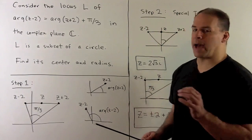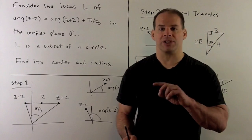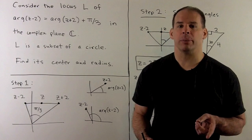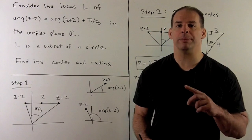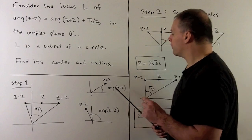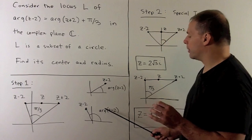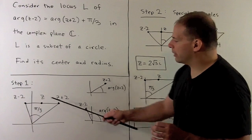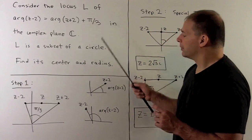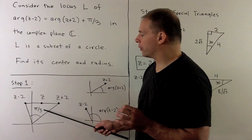We want to consider what's happening when we talk about arguments. The argument of a complex number is the angle measured counterclockwise from the positive real axis to our point, between 0 and 2pi. For argument of z plus 2, we're talking about this angle. For argument of z minus 2, we're talking about this angle. So this relation says that for this triangle, the angle at the origin is going to be equal to pi over 3.